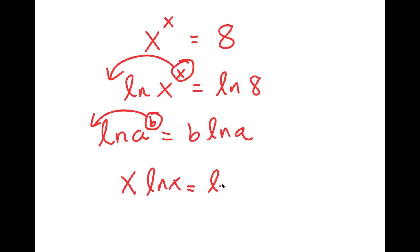And a helpful property that comes with logarithms is that if I have something in the form ln a to the power of b, I can move this exponent to the front. So this turns into b times ln a. So in this case, I have ln x to the power of x, and I can move x to the front. So now I get x times ln x is equal to ln 8.